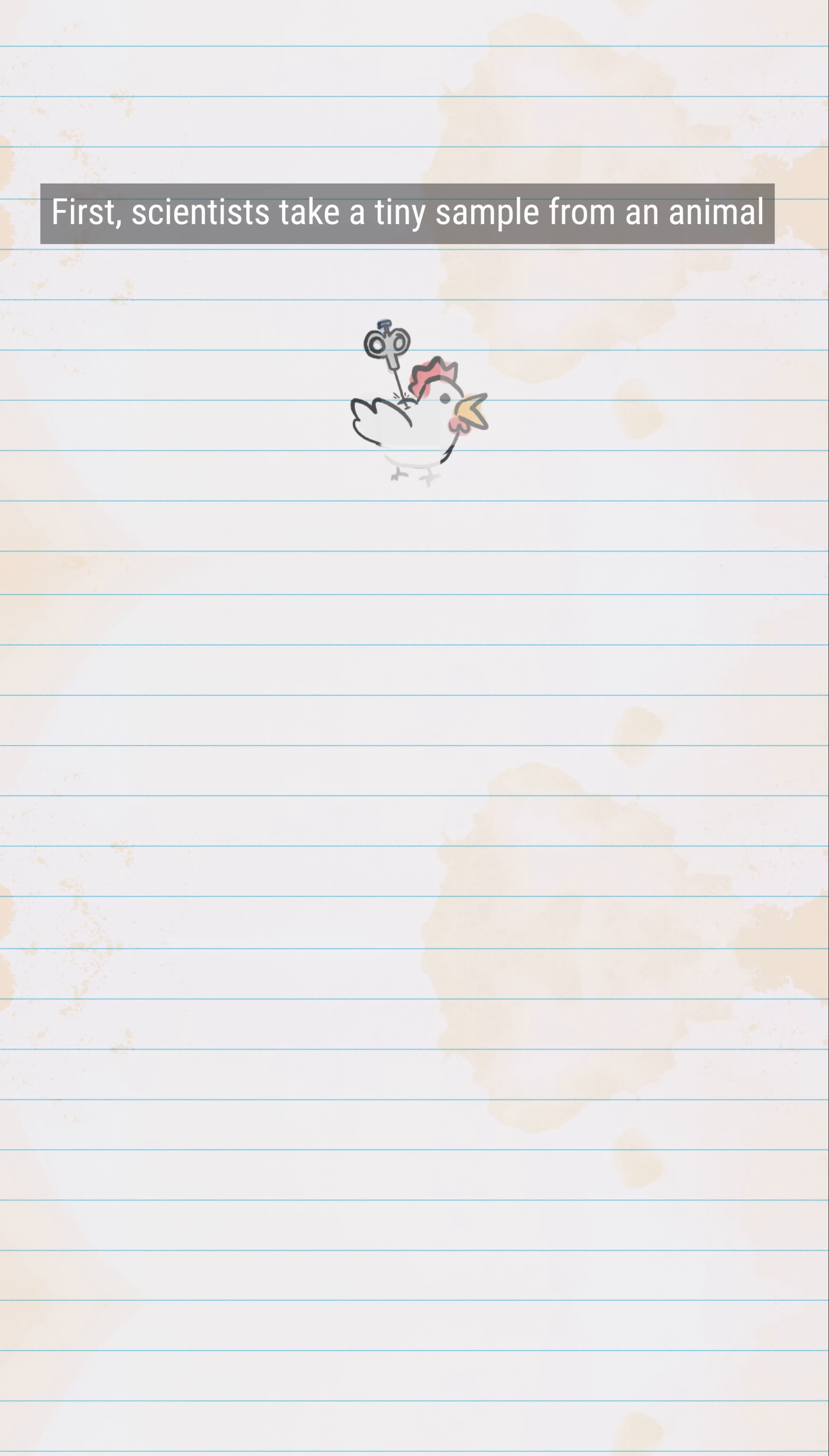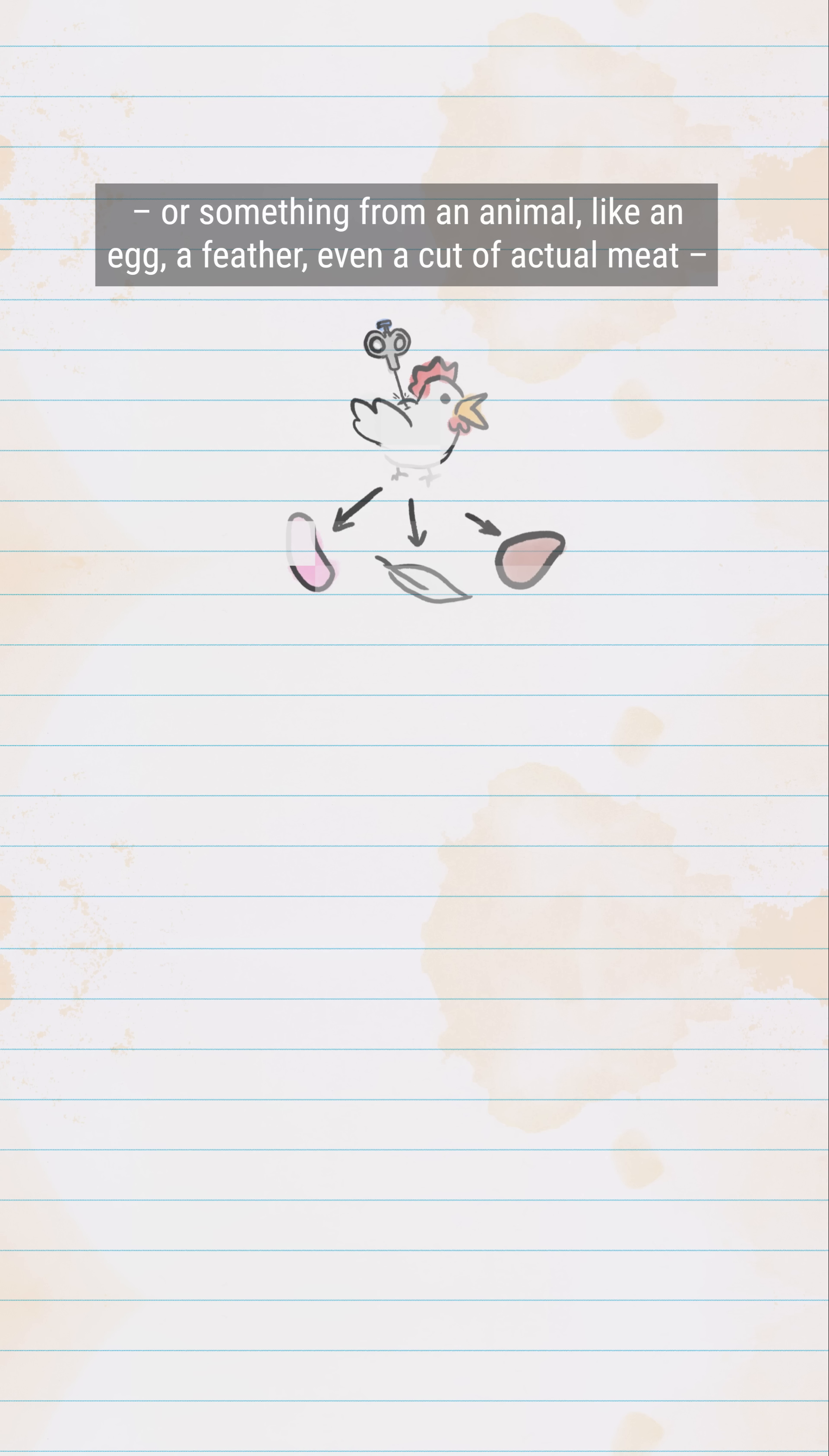First, scientists take a tiny sample from an animal — or something from an animal, like an egg, a feather, even a cut of actual meat — to harvest a specific type of cell.